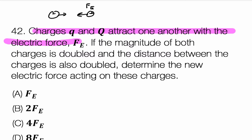If the magnitude of both charges is doubled — that's the first condition — and the magnitude of both charges is doubled means each charge becomes 2 times its original value. And the distance between the charges is also doubled. Determine the new electric force.